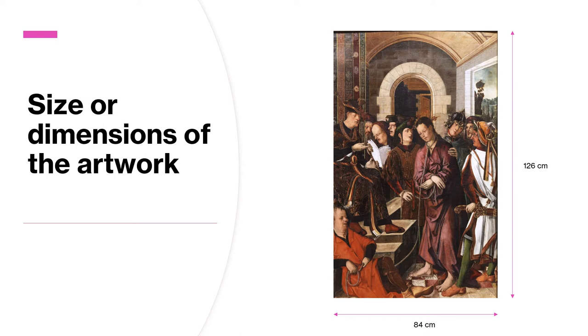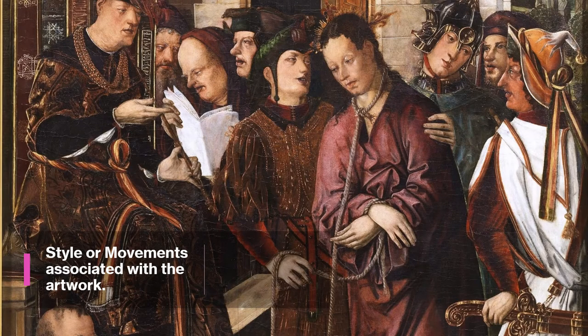The width of this artwork is 84 centimeters and the height is 126 centimeters. Rodrigo de Osona was influenced by Flemish and Italian Renaissance painting, like his son Francisco de Osona. He is considered one of the pioneers of Renaissance forms in Spanish painting. Italian influences are nuanced by the knowledge and application of formulas typical of Flemish painting, such as expressiveness far from idealization. The aspects of kindness and sweetness serve more devotional reasons than a rationalized and rigorous vision of reality.